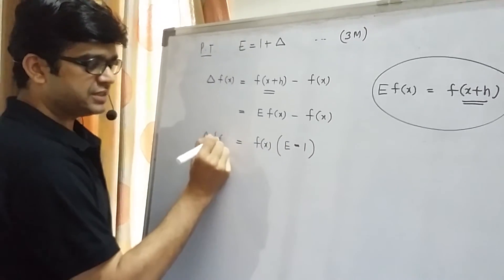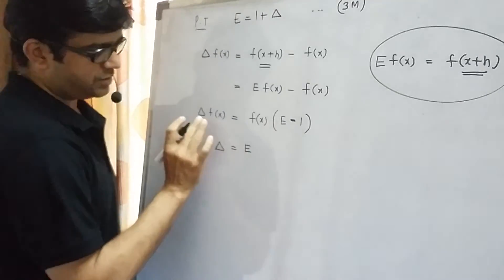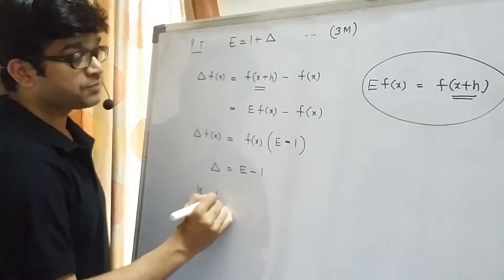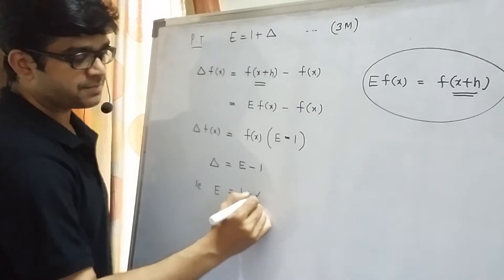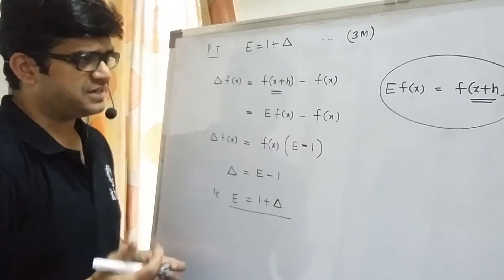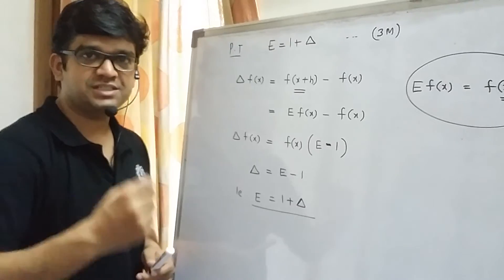This side we have delta f(x). Dividing both sides by f(x), we get delta equals to E minus 1 and that is E is equals to 1 plus delta. So very simple problem and many times it has been asked in exam for three marks. I will see more problems.